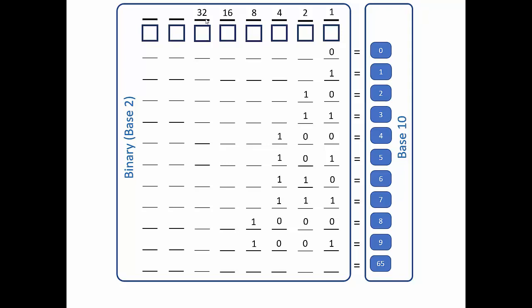Continuing the same pattern, the next box would be worth 64 — which is pretty exciting to me because it reminds me of my childhood. My first computer was a Commodore 64, which meant it held 64 kilobytes of RAM. Then my college roommate had the next Commodore computer: the Commodore 128 — which would be the next value here.